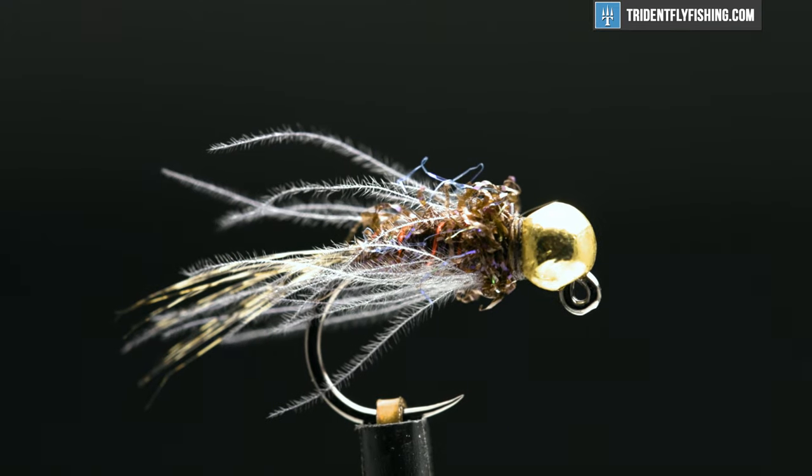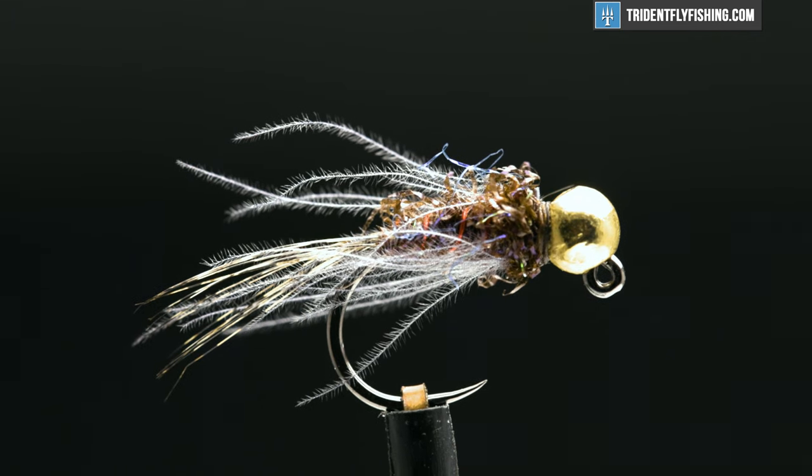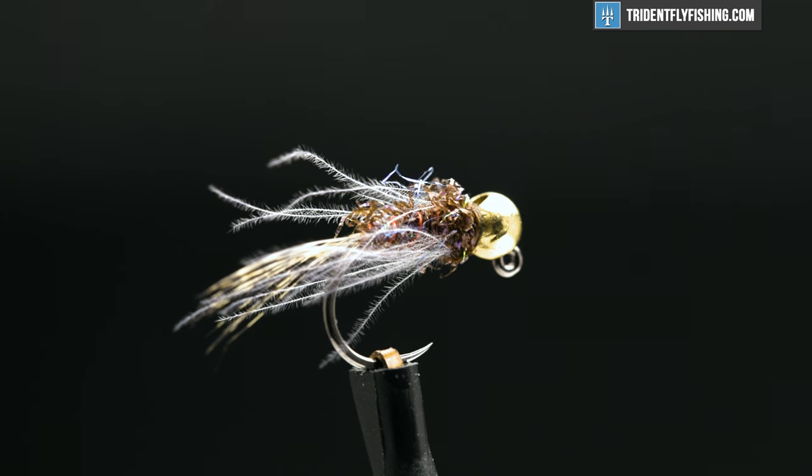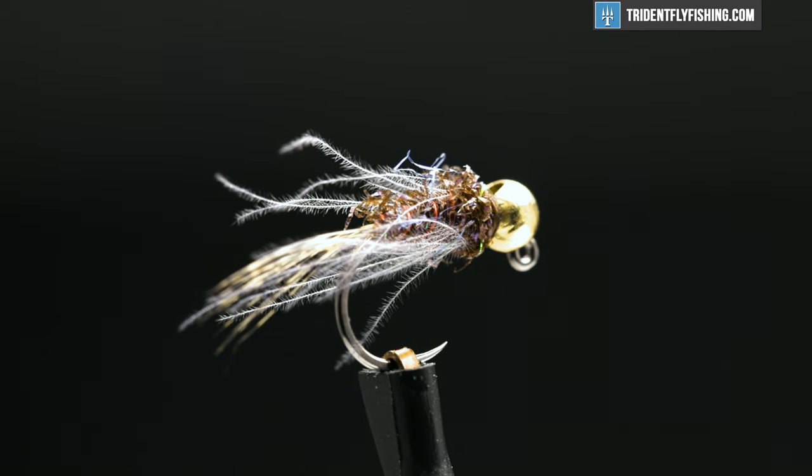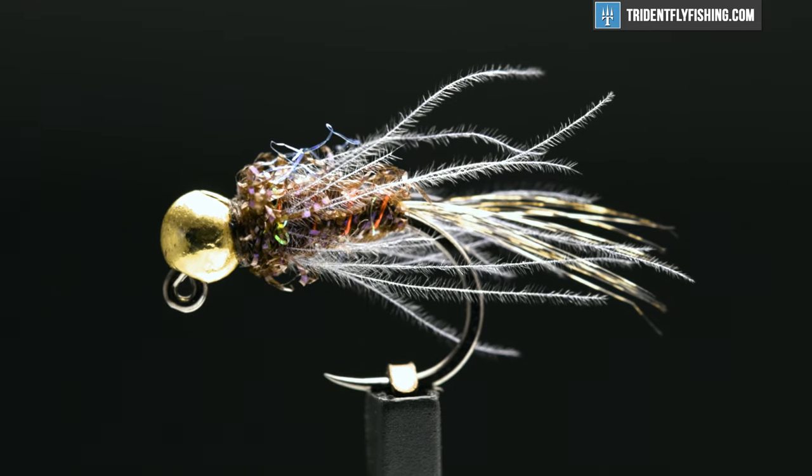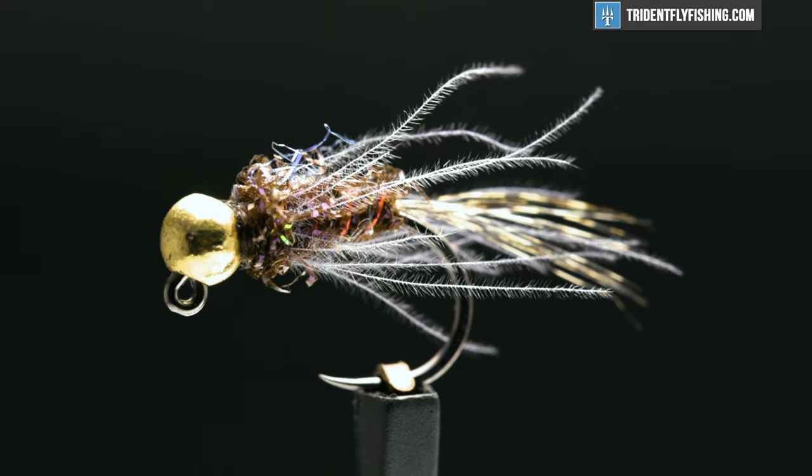Hey guys, Jerry from Trident Fly Fishing, and today we're going to tie a cool little Euro nymph fly called the Duracell. Very simple, couple of ingredients, and works really well as either a fat mayfly or a good solid caddis pattern. You can change up the colors. We're going to tie it in the original color here with a gold bead. We're going to get started on it right now.